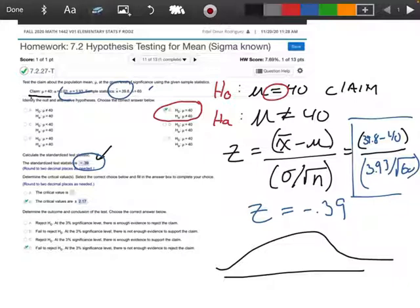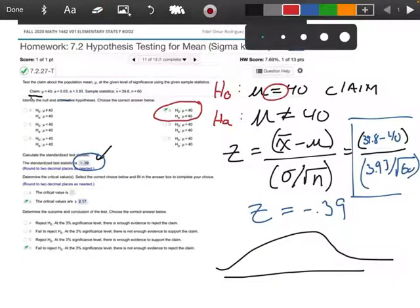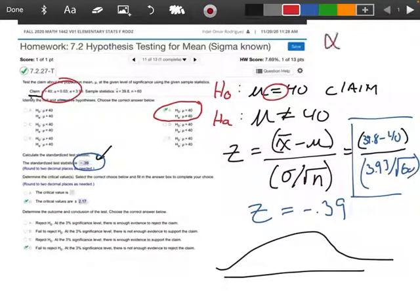They gave me some information up here. Here we go. The piece that I'm looking for is that my alpha is 0.03. So now that we've done some of this work already, we need to figure out, is this a left-tail test, a right-tail test, or a two-tail test?